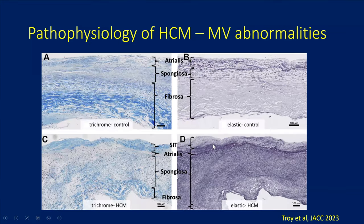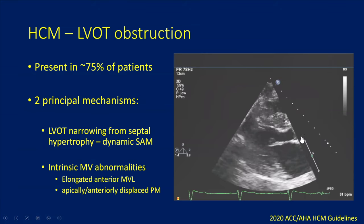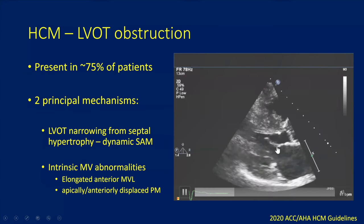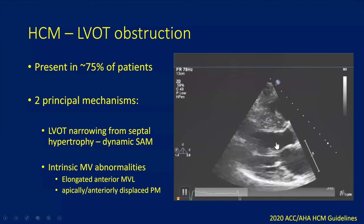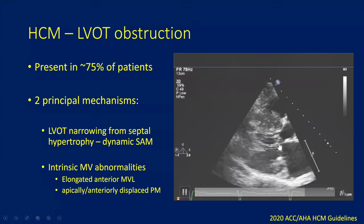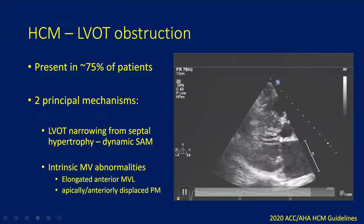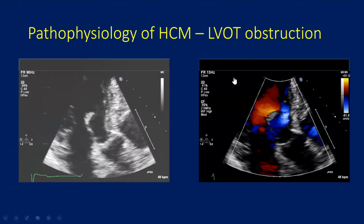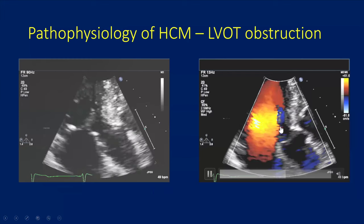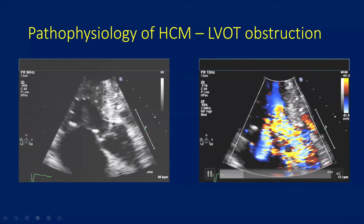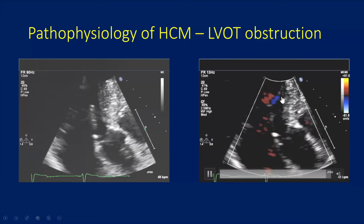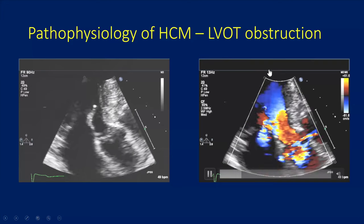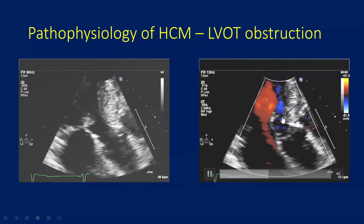So it's actually a combination of subvalvular apparatus abnormalities, intrinsic mitral valve abnormalities, and thickening of the septum that narrows the LVOT. All of these contribute to dynamic LVOT obstruction due to systolic anterior motion of the mitral valve. Here you can see the mitral valve moves into the septum in systole. Here is color Doppler — notice how there's flow acceleration at the level of the SAM. Sometimes when we look at color Doppler, there can also be a concurrent intra-cavity gradient, where flow acceleration starts much lower. But in this case it starts at the level of the obstruction.